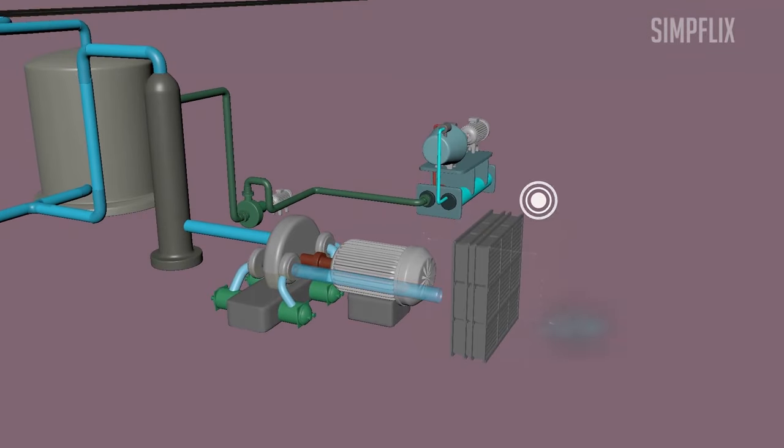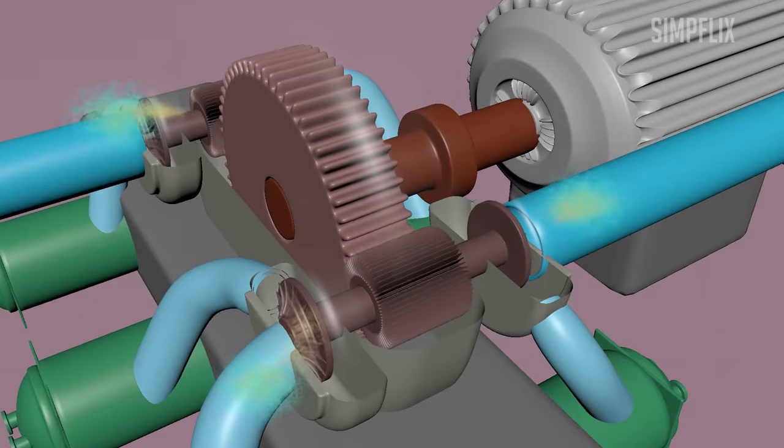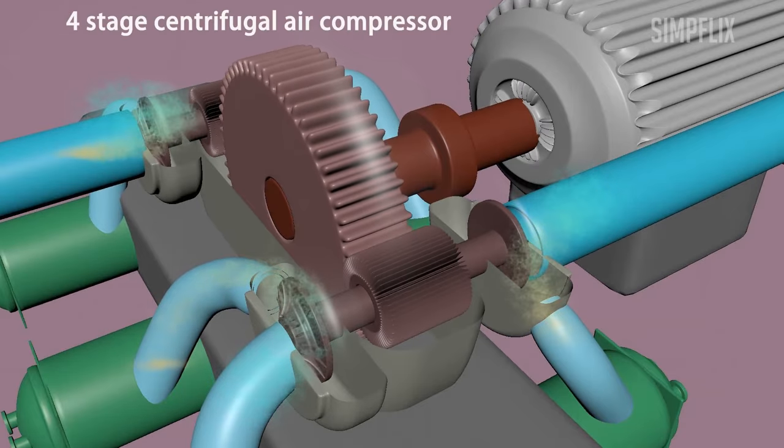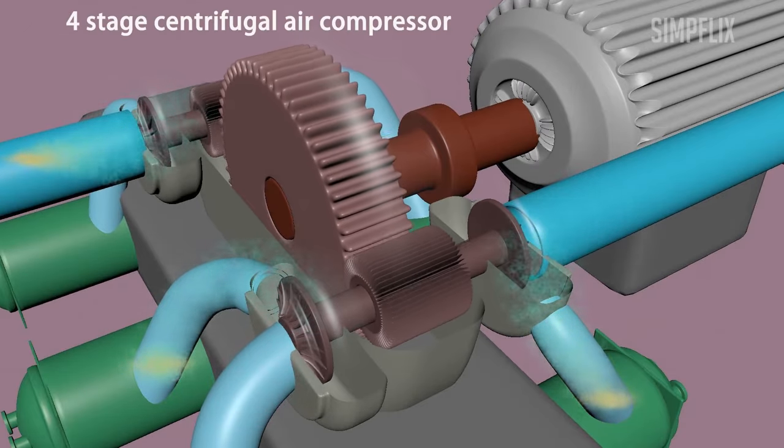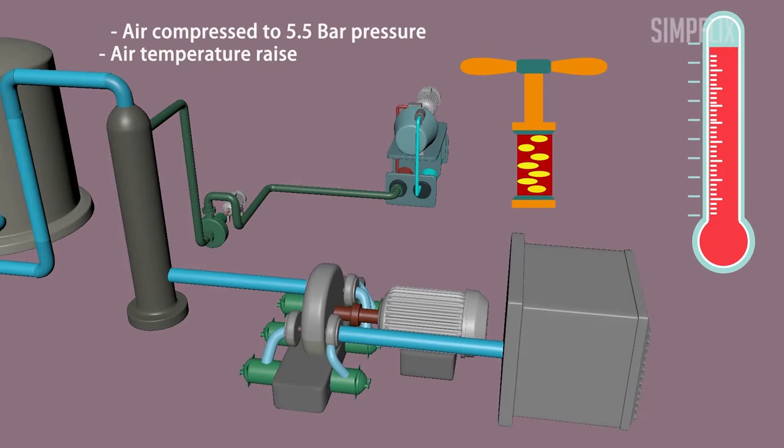First, air from the atmosphere is suctioned and filtered using filters to remove dust particles and other hard impurities. Then filtered air is compressed in a compressor up to 6 bar pressure to make the air flow from start to end of the process. If the air is compressed, then temperature will increase due to increase in kinetic energy of air molecules.